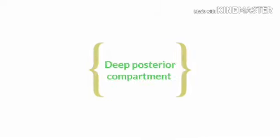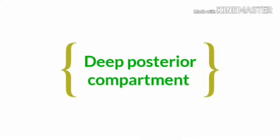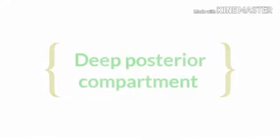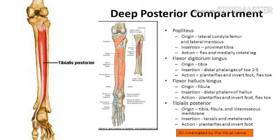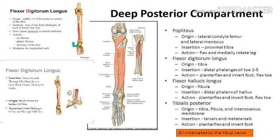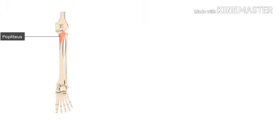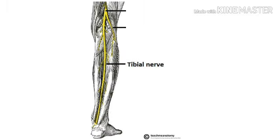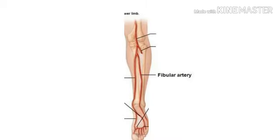The deep posterior compartment contains: tibialis posterior, flexor hallucis longus, flexor digitorum longus, and popliteus. The neurovascular structures that supply this compartment are the tibial nerve and the posterior tibial vessels, including the fibular artery.